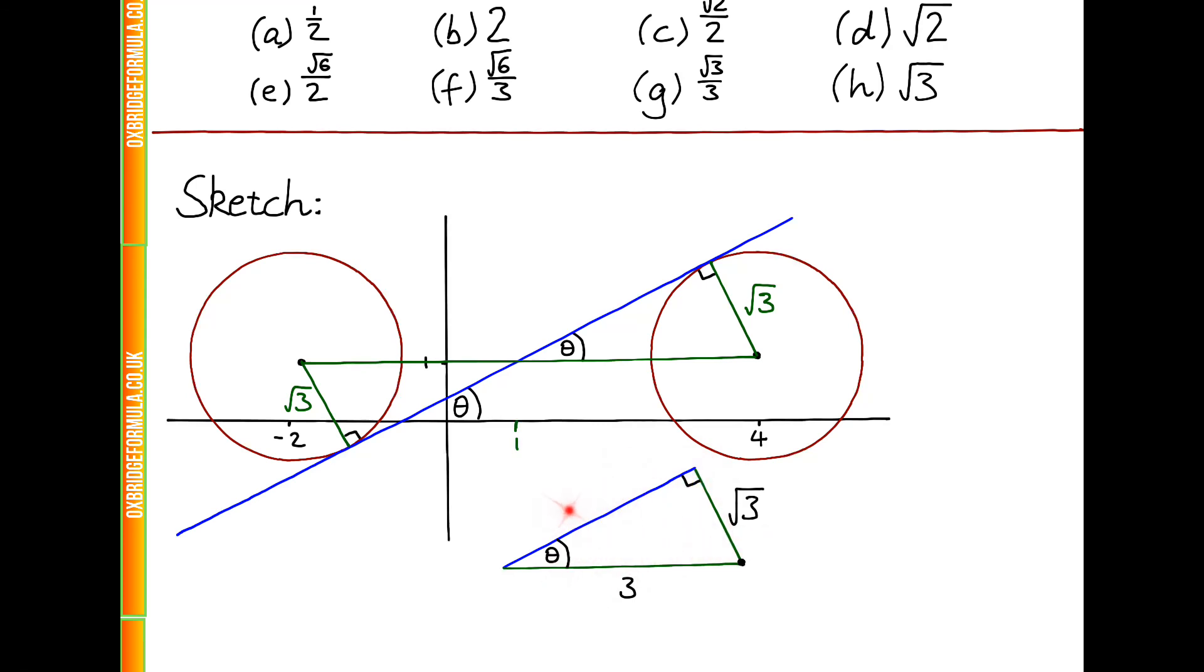So, 3 squared is 9, and square root 3 squared is 3. So, 9 minus 3 is 6, so we can see this length is square root 6.